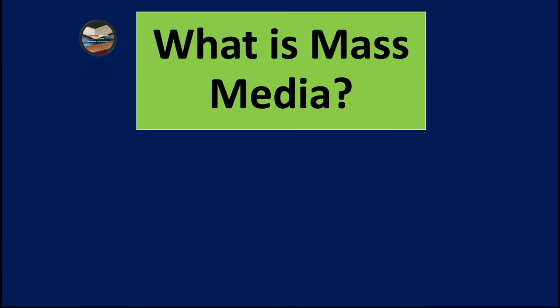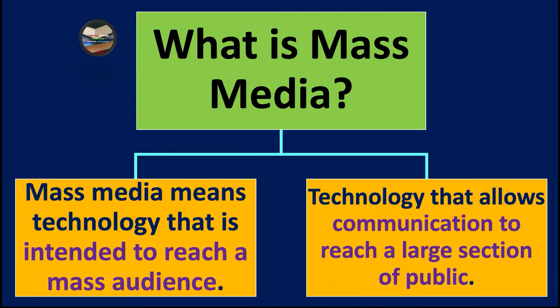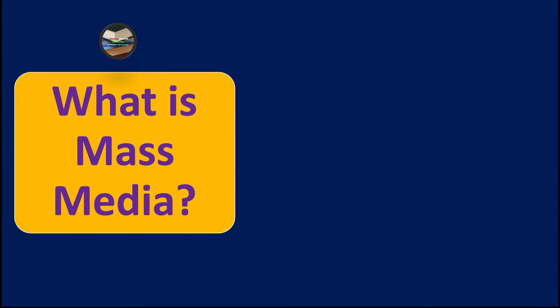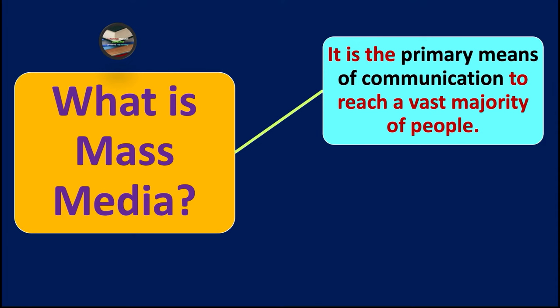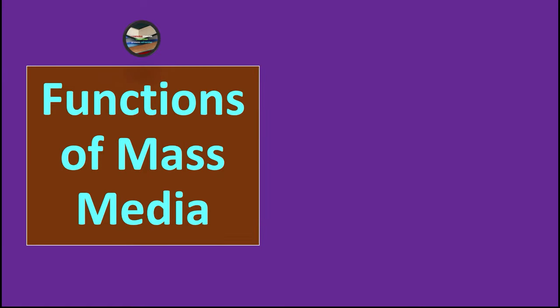What is mass media? Mass media means technology that is intended to reach a mass audience. In other words, it is technology that allows communication to reach a large section of the public. It is the primary means of communication to reach a vast majority of people. The general public primarily relies on mass media for information regarding entertainment, social, and political views.